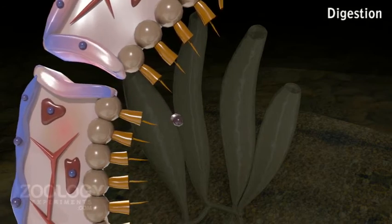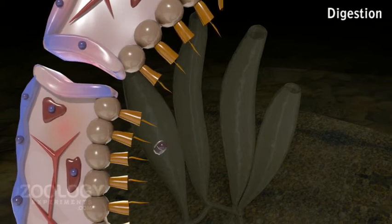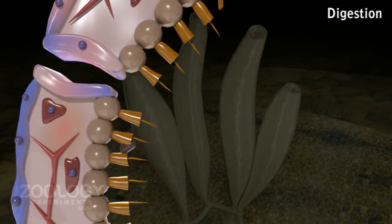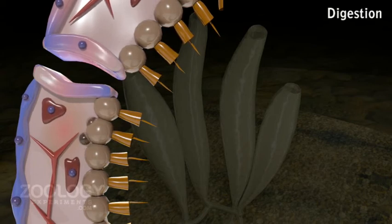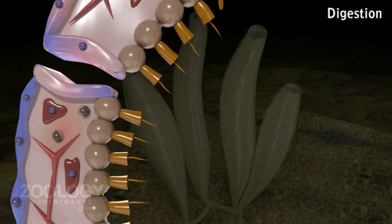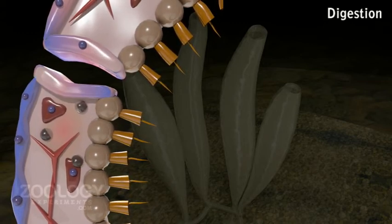Amoebocytes receive the partly digested food particles from choanocytes, complete digestion, and distribute the digested food from cell to cell by diffusion. Amoebocytes digest food intracellularly.